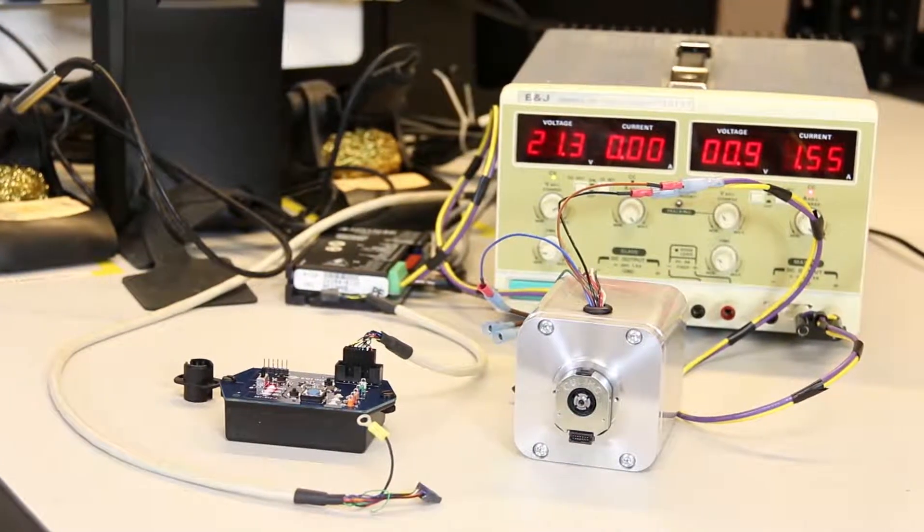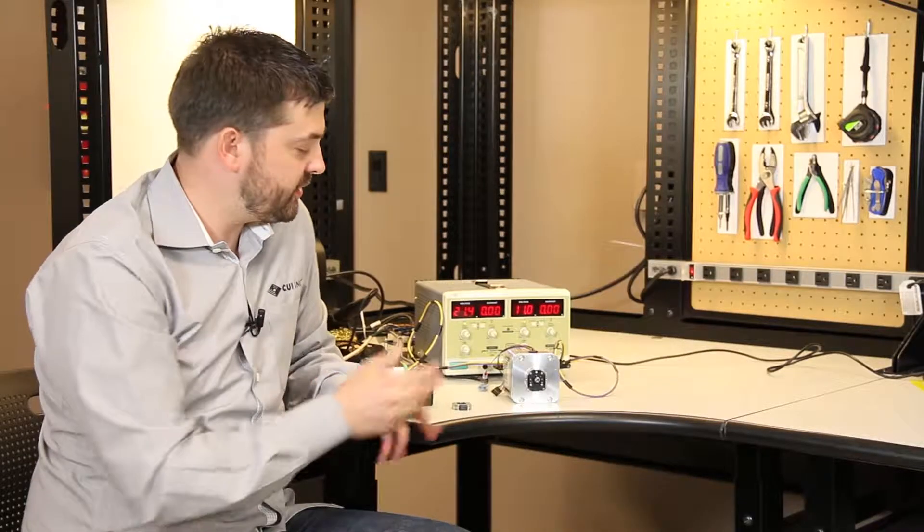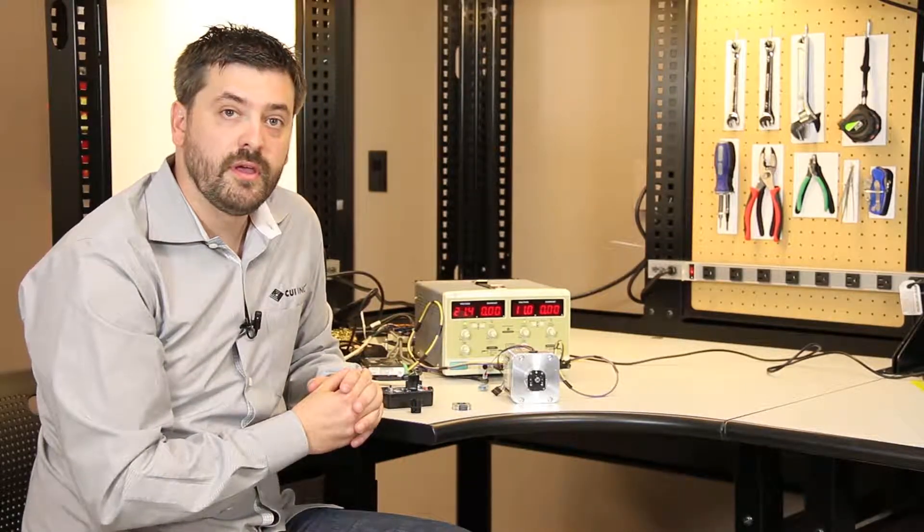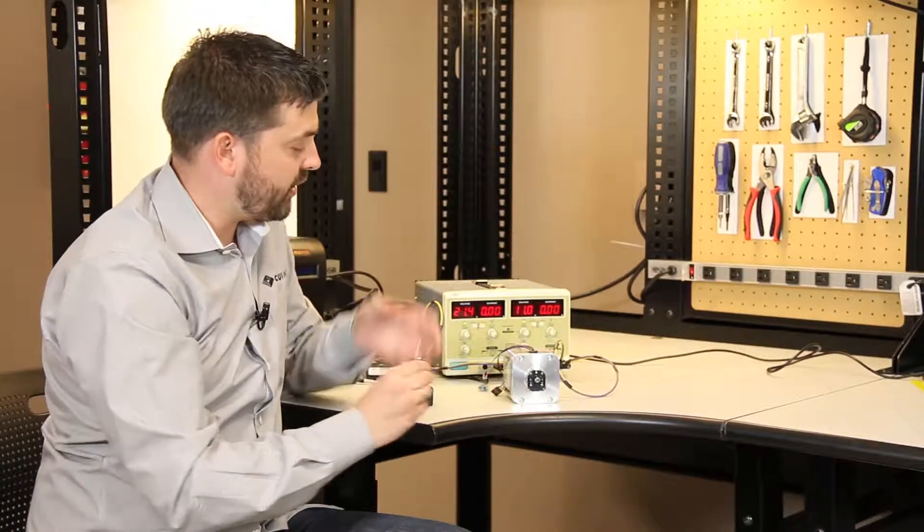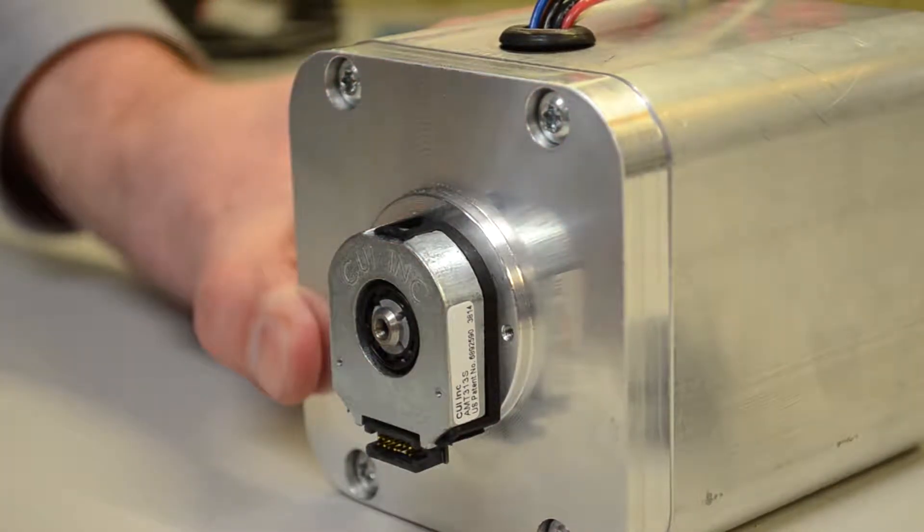Now I'm going to demonstrate the very simple process of aligning an AMT31 commutation encoder to this brushless DC motor. First step is to take the AMT31 encoder housing and snap it into place on the base that I've already mounted.